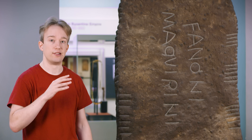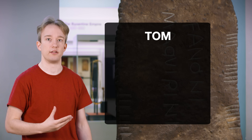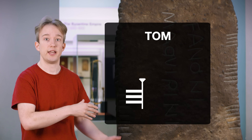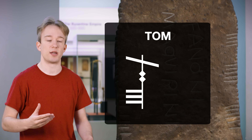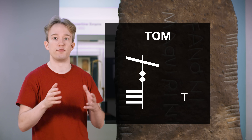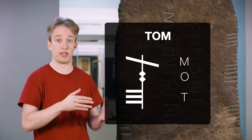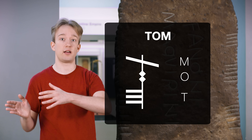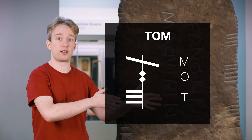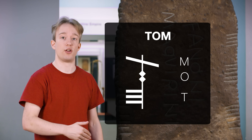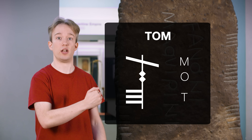You read this along the stem line, along the corner. Each character is made of one to five markings, which will all be on one side of the line, the other side of the line, through the line, or on the line.